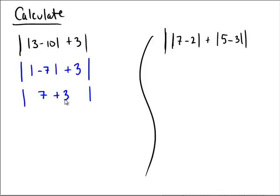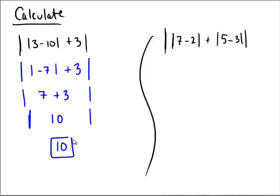To that seven we're going to add three and then take an absolute value. What's inside the absolute value now? Seven plus three is ten, so we have the absolute value of ten. How far away is ten from the origin? It's ten units away, so the answer to this problem is ten.